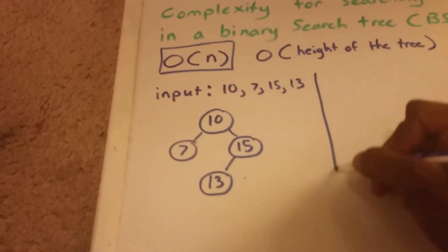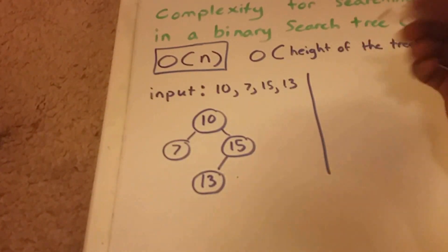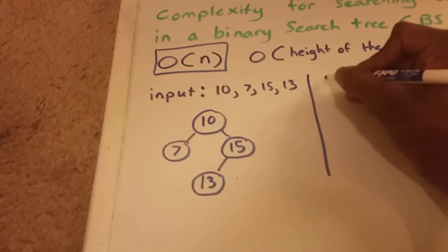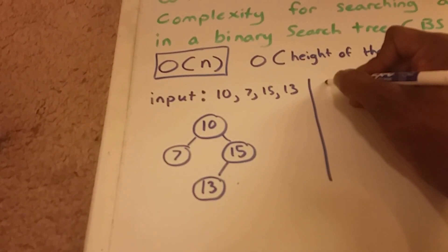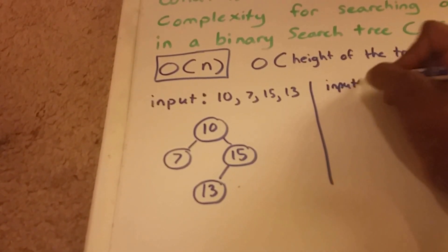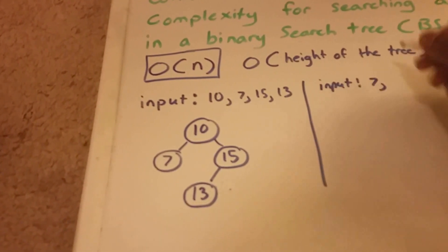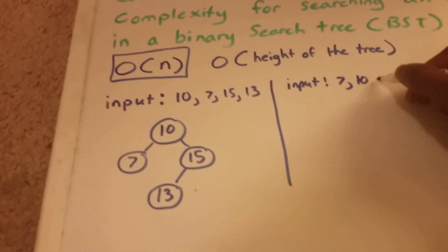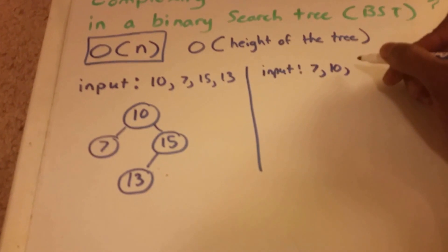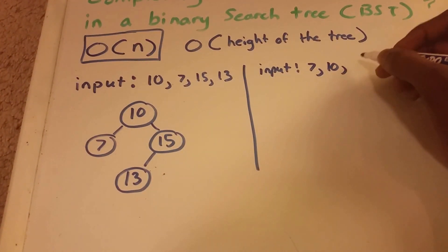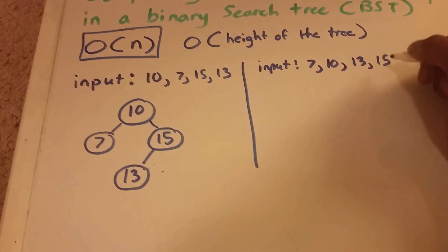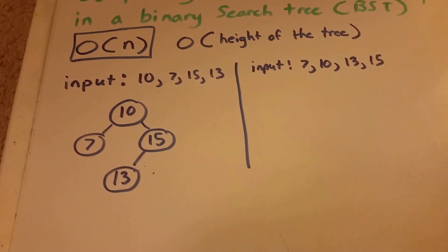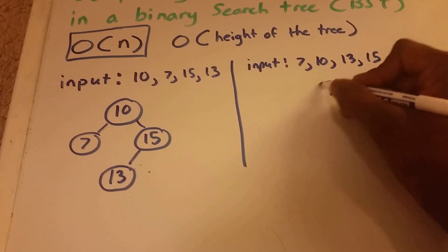Now, using the same input, but in a different order, let's go from least to greatest. So I'm going to input 7, then 10, then 13, and then 15. All right, so let's input this into the tree.